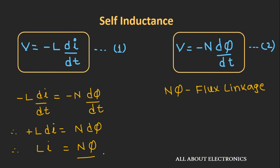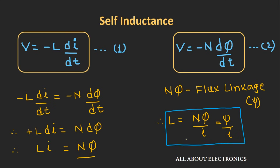Here, N × φ is also known as flux linkage or magnetic flux linkage, sometimes denoted by the symbol ψ. So we can write L = Nφ/I, or ψ/I. This is the expression for inductance in terms of magnetic flux and current.